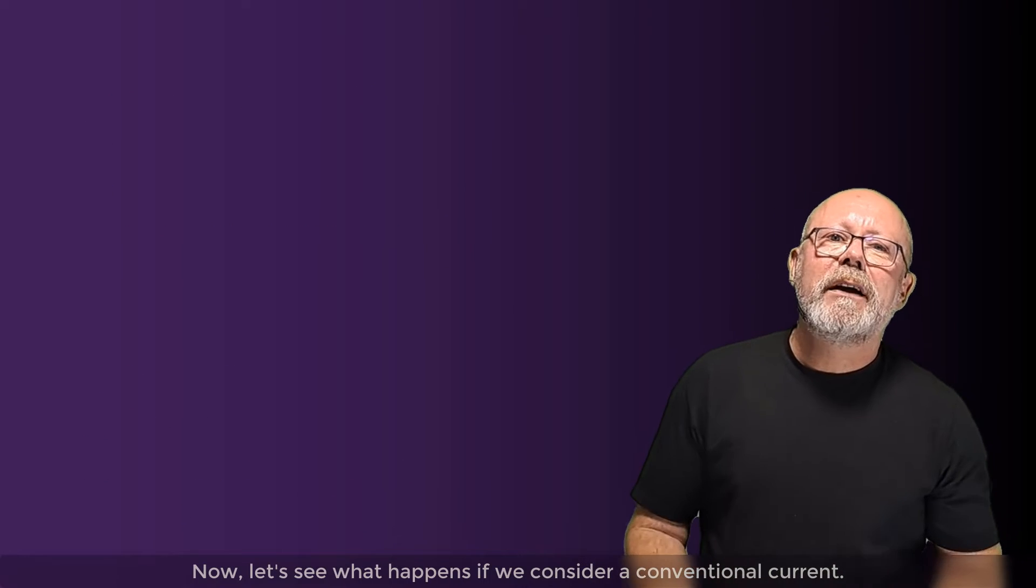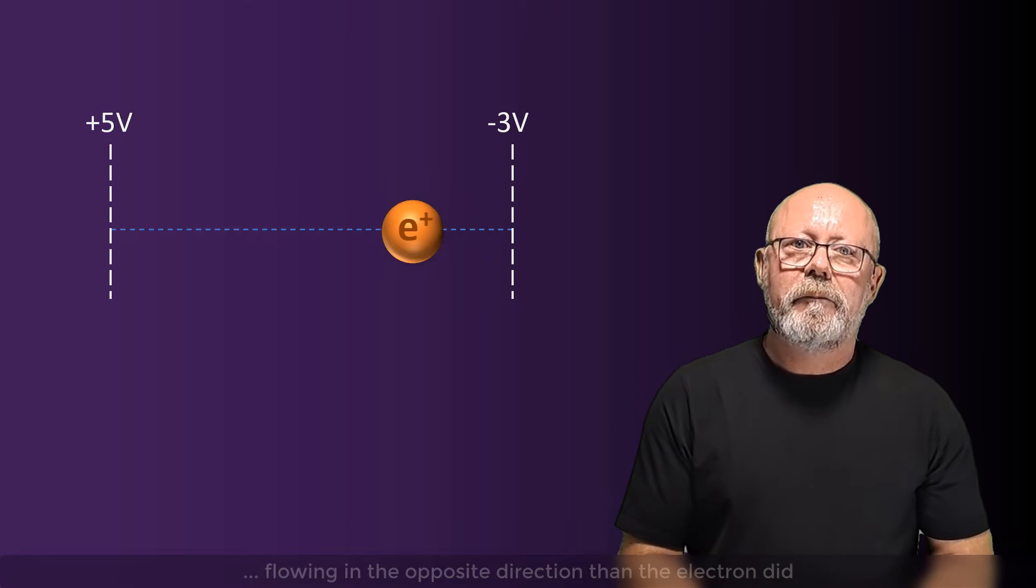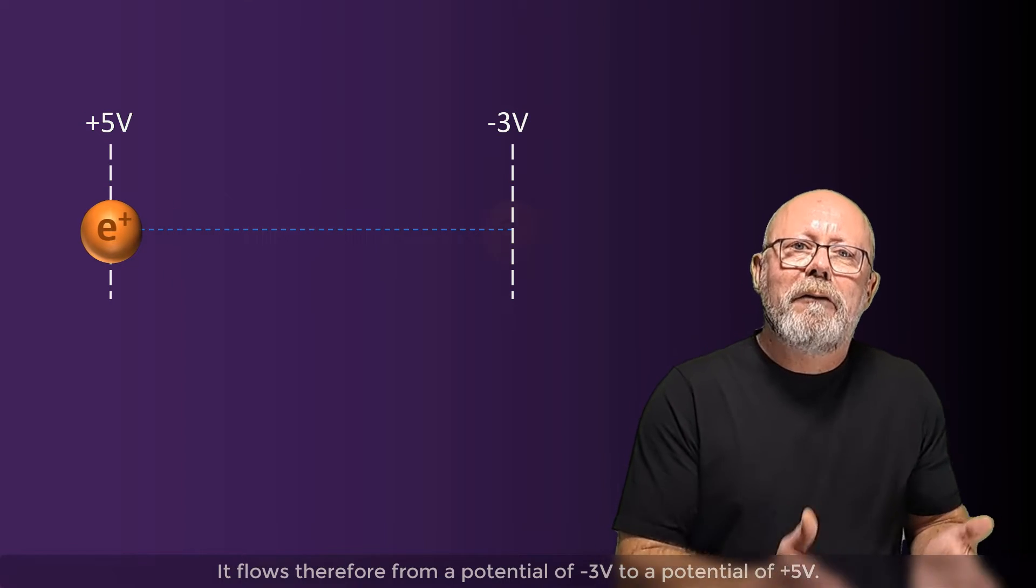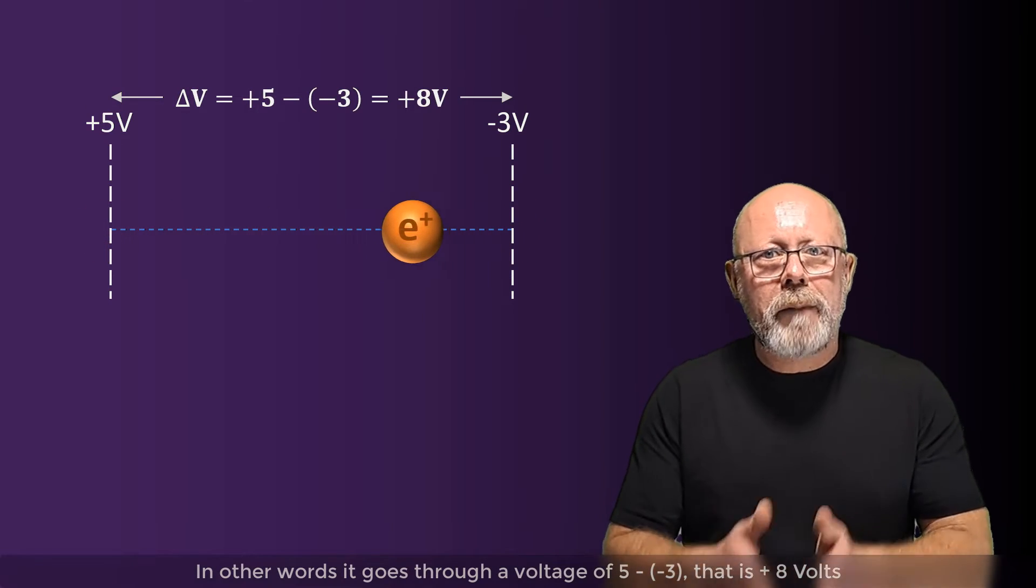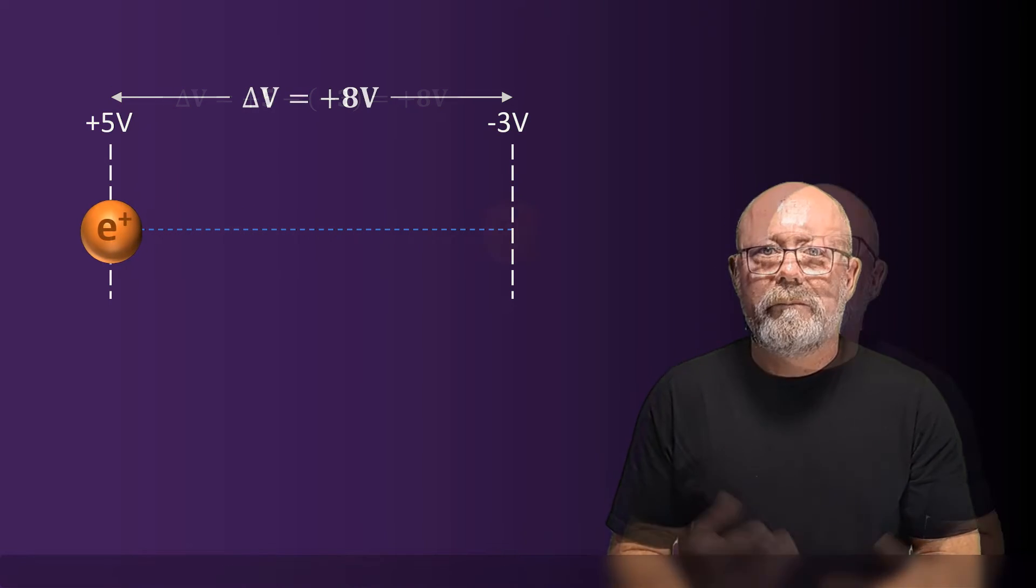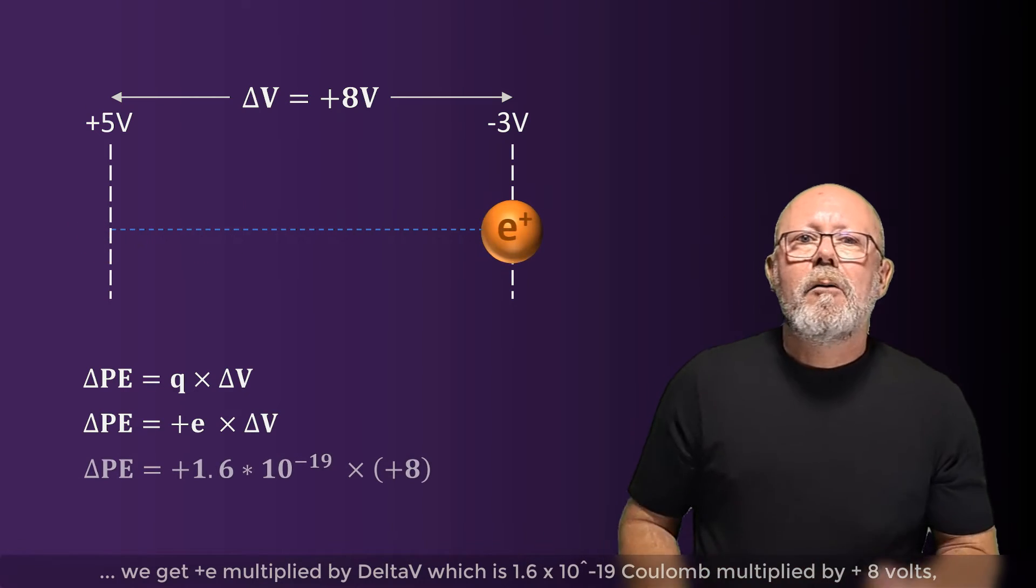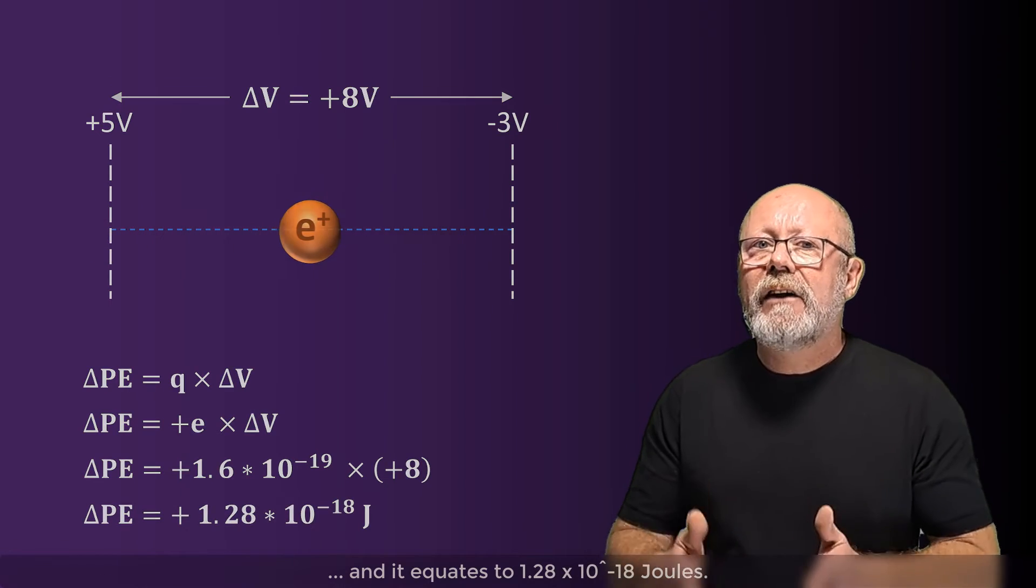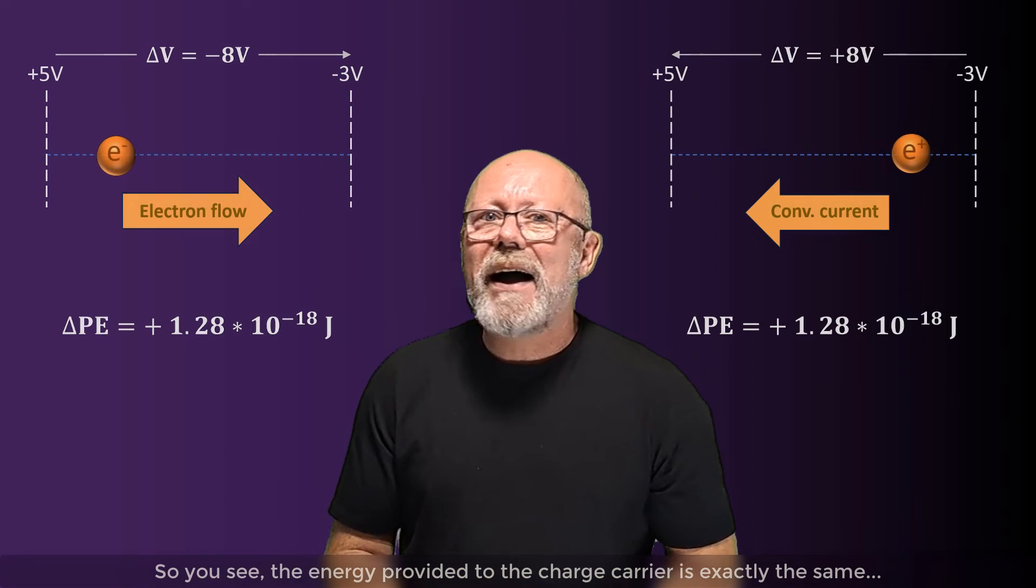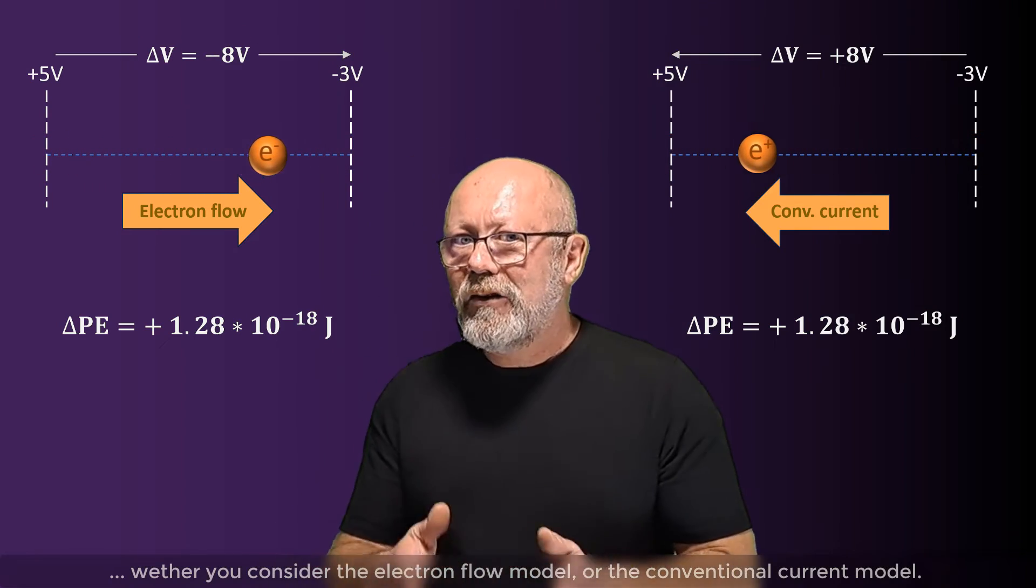Good. Now, let's see what happens if we consider a conventional current. Imagine a positron, charged with plus E coulomb, flowing in the opposite direction than the electron did. It flows, therefore, from a potential of minus 3 volts to a potential of plus 5 volts. In other words, it goes through a voltage of 5 minus minus 3, that is, plus 8 volts. If we calculate the gain in potential energy of that positron, we get plus E multiplied by delta V, which is 1.6 by 10 to the minus 19 coulomb, multiplied by 8 volts, and it equates to 1.28 by 10 to the minus 18 joules. So, you see, the energy provided to the charge carrier is exactly the same whether you consider the electron flow model or the conventional current model.